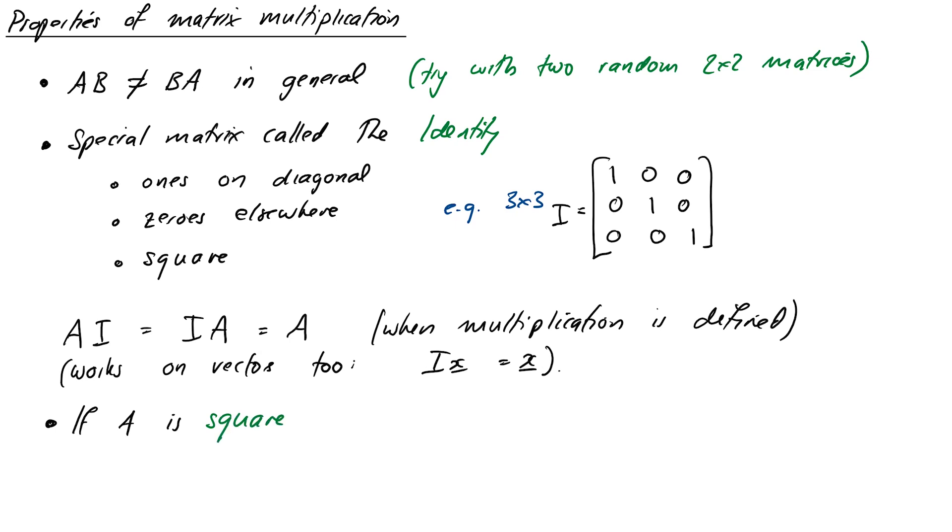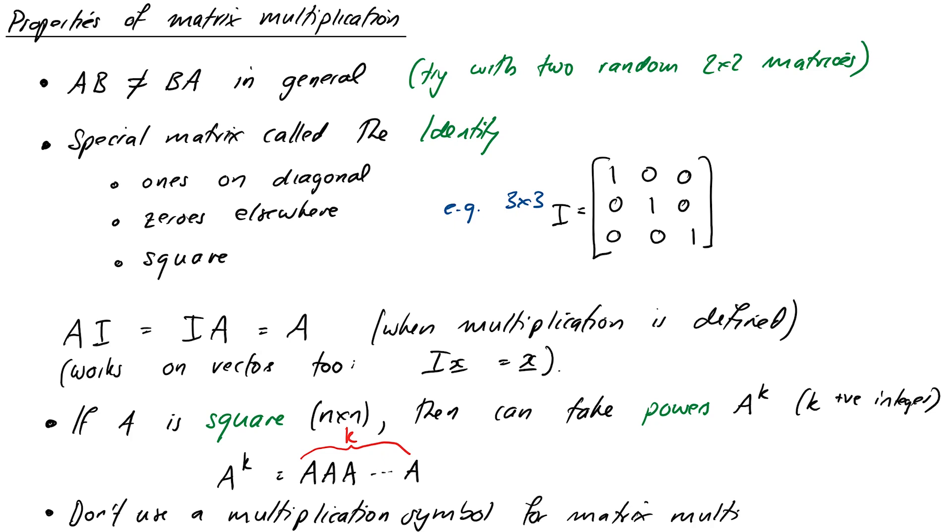Lastly, if A is square (n by n), then we can define matrix powers the way you might expect by using matrix multiplication. For example, A cubed means A times A times A. The power has to be a positive integer. And note that we don't usually use a times symbol for matrix multiplication - we just write the matrices side by side.